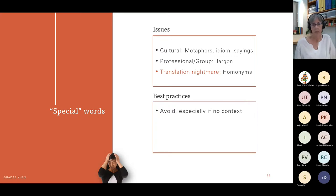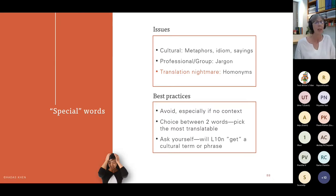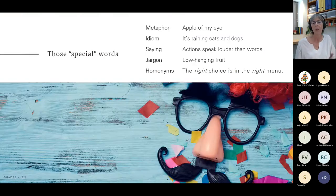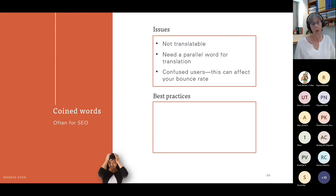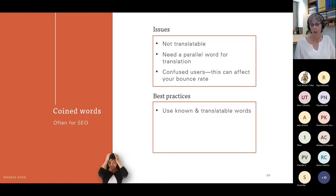Avoid special words, especially if there's no context. If there's a choice between two words, pick the most translatable one even if it's not the one your heart sings from. Ask yourself: will localization get a cultural term or phrase? These special words mask your language and make it very difficult to translate or find a similar example in a given culture. The homonym example: 'The right choice is in the right menu' — 'low-hanging fruit' — all of these would challenge a translator and localizer. Coined words are essentially not translatable; you need a parallel word. And confused users can simply affect your bounce rate — so use known and translatable words. Clear communication is our priority.